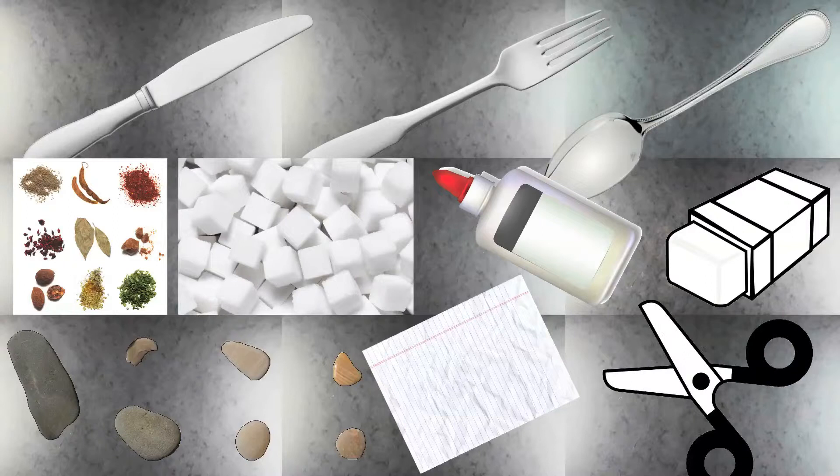Collections can be made from anything such as knives, forks, spoons, rubbers, glues, sugars, spices, rocks, papers or scissors.